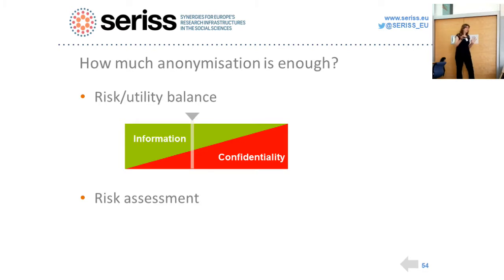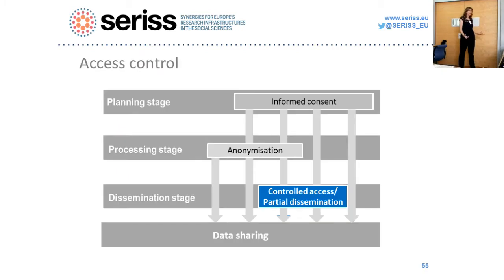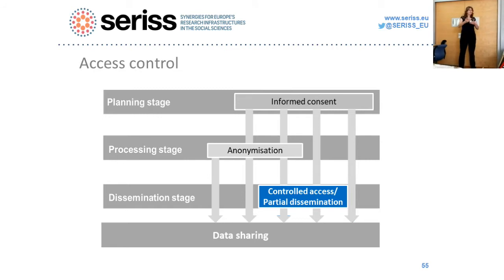Anonymization has to be considered together with consent and data access control. If someone has consented for you to keep their names and the information is not sensitive — for example, a politician used to speaking in public — there is no need for anonymization. If you have sensitive data but want to keep some information for research potential, consider asking for consent and then controlling access to the data.